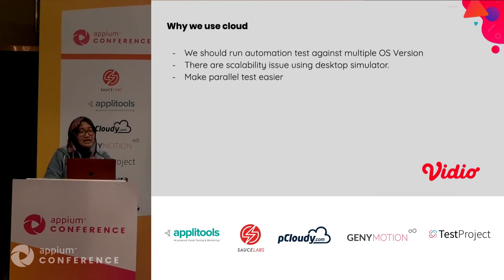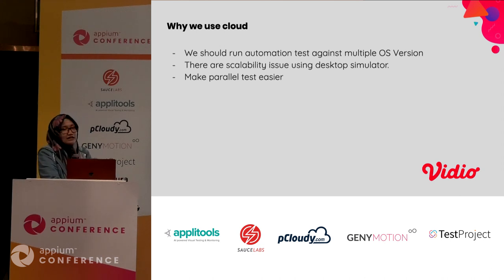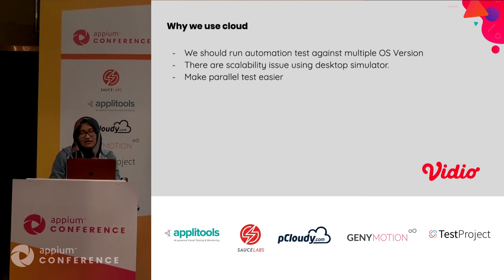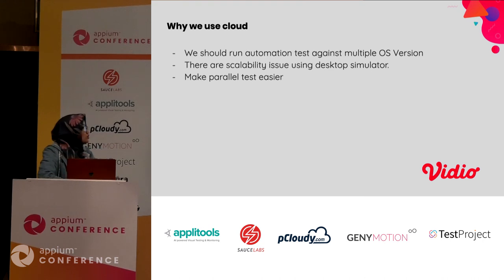So, why do we use cloud? First, we need to run automation tests against multiple OS versions. There are many variations — different brands, and different OS versions for both iOS and Android. If we test using real devices, it's much harder and takes more time. And the maintenance cost is really costly. There is also better scalability using cloud simulators.